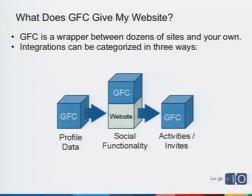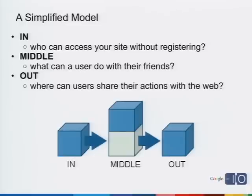We can break down the integration with Friend Connect into three different ways: we let profiles come into the website; at the website itself, we add social functionality; and going out of the website, we have activities and invites. To simplify further: it's basically who can access your site without registering, what can a user do with their friends, and where can users share their actions with the rest of the web.